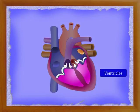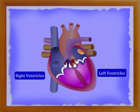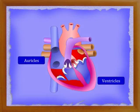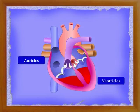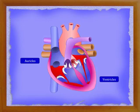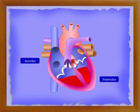The chambers present below the oracles are called ventricles. They are the right and left ventricles. The walls of the ventricles are thicker than the walls of oracles. The right oracle opens into the right ventricle and the left oracle opens into the left ventricle. Blood flows through the heart in the direction of oracles to ventricles. To regulate the flow of blood through the heart in one direction, there are valves between the oracles and the ventricles. They allow blood to flow from oracles to ventricles.